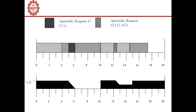Let's see the example. We are using the same dataset considered in background processing and in the polling server. We have two periodic tasks and two aperiodic tasks. Task A has execution time 4 and period 10; task B has execution time 8 and period 20. Task A is on higher priority than task B. Two aperiodic requests arrive: one at time instant 5 with execution time 1, and another at time instant 12 with execution time 0.5. The server has capacity 1 and period 5.